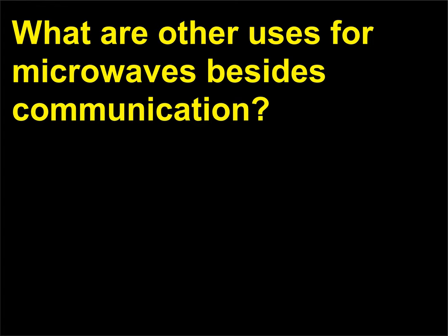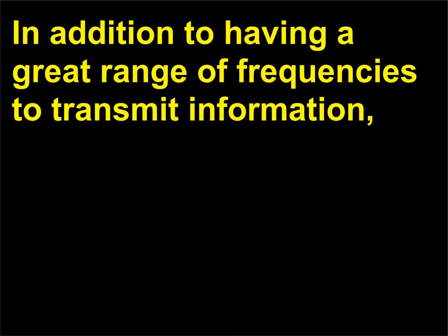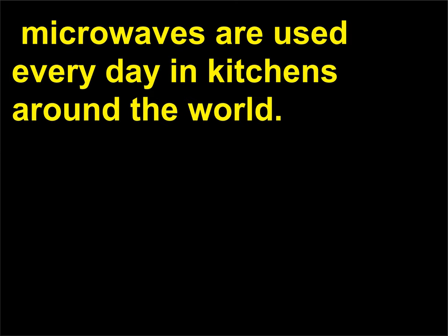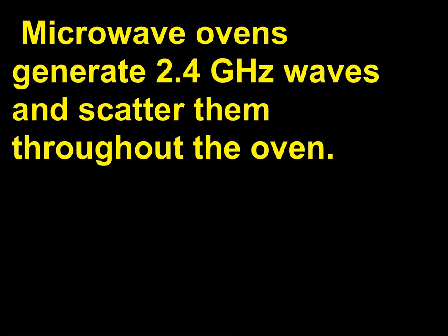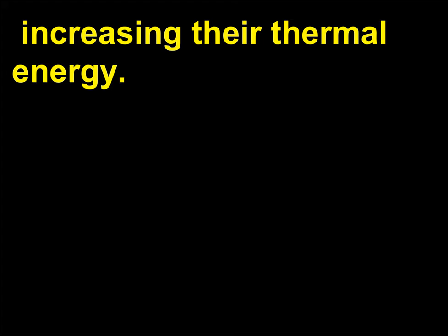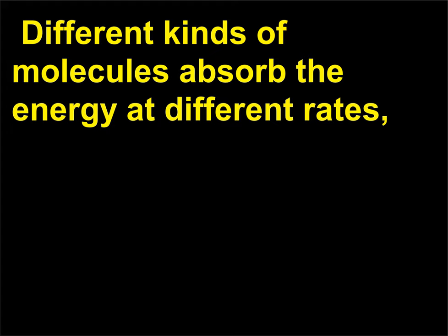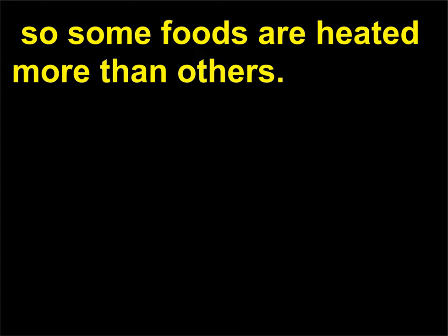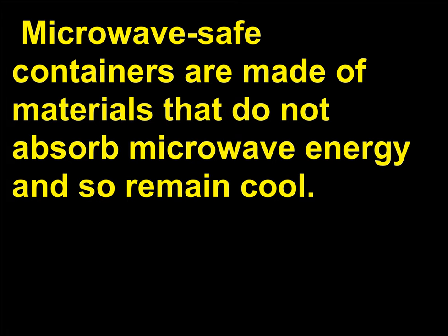What are other uses for microwaves besides communication? In addition to having a great range of frequencies to transmit information, microwaves are used every day in kitchens around the world. Microwave ovens generate 2.4 GHz waves and scatter them throughout the oven. The microwaves excite water and fat molecules into resonance and cause them to rotate, increasing their thermal energy. Different kinds of molecules absorb the energy at different rates, so some foods are heated more than others. Microwave safe containers are made of materials that do not absorb microwave energy and so remain cool.